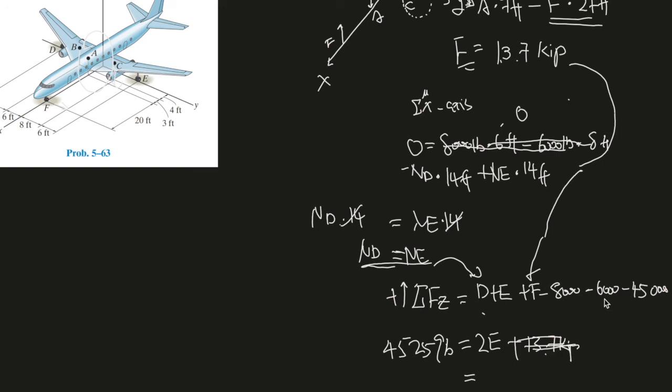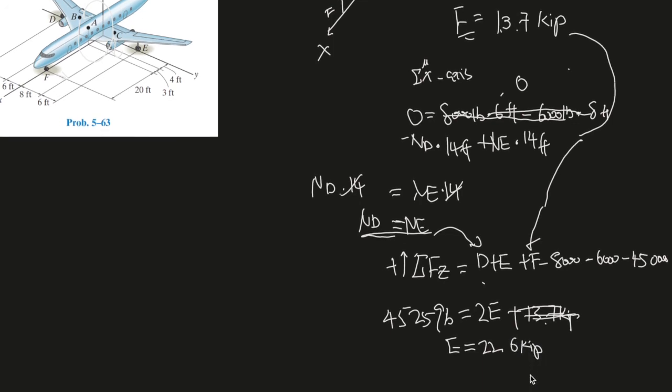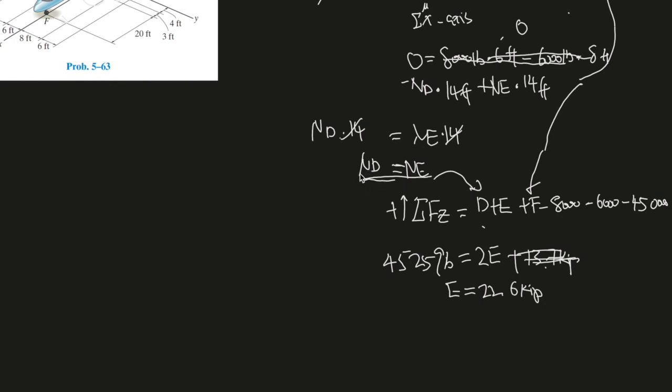All right. Yeah. So this whole thing, when it becomes positive minus the 13.7 kip should give you this amount. And you have 2E, so divided by 2 on both sides. So the normal force at E should give you 22.6 kip. And that's E. And as we proved earlier, the normal force at D and the normal force at E are similar. So that also means, I'll just write it over here. And D is also equals to 22.6 kip.